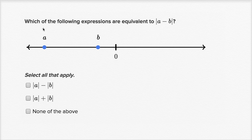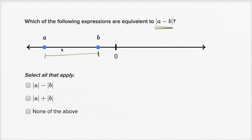In this first question, we are asked which of the following expressions are equivalent to the absolute value of a minus b. As a reminder, the absolute value of a minus b is going to give us the distance between a and b. That is the absolute value of a minus b, which is of course the same thing as the absolute value of b minus a.